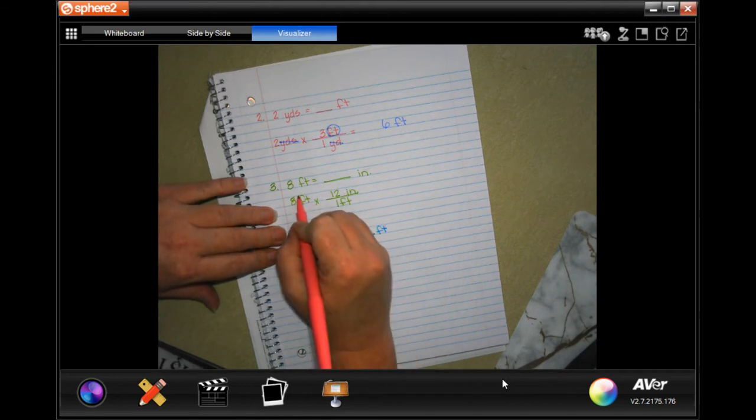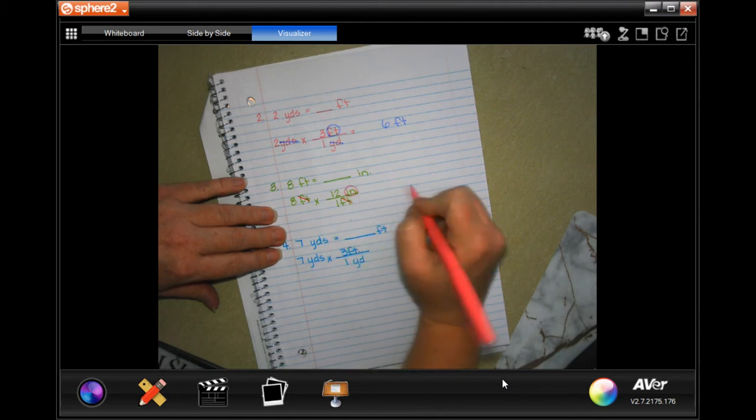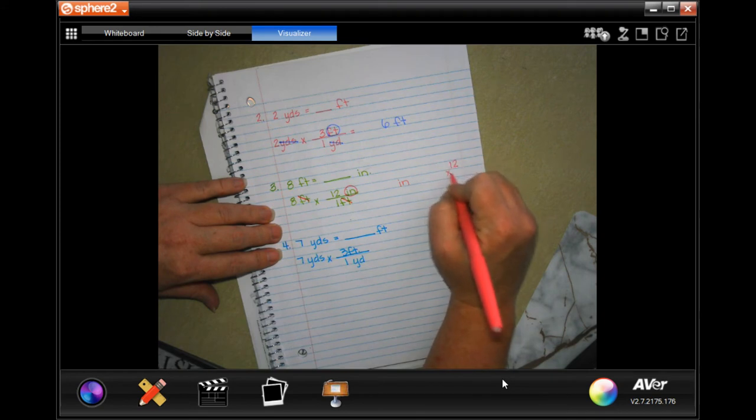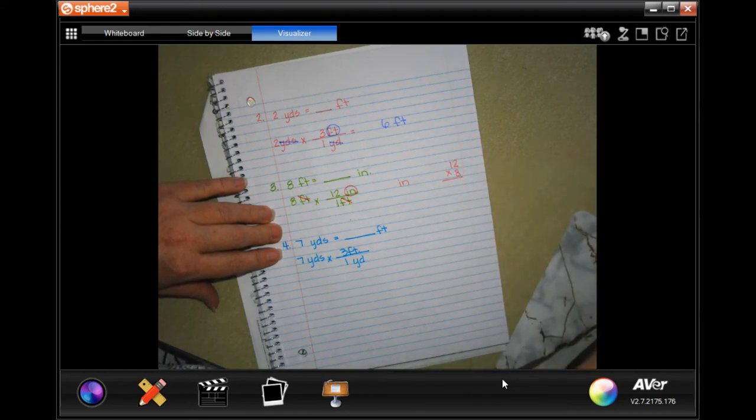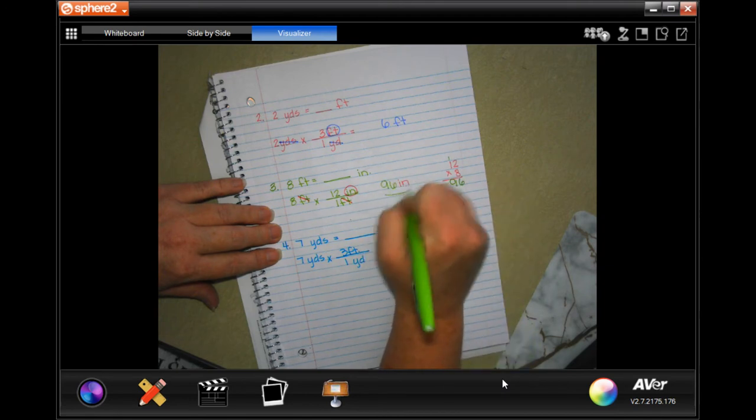And I put foot on the bottom because I want to cross out. I want to cross-cancel feet and wind up in inches. Now I just have to do 8 times 12. Well, I can do that over here. 8 times 2 is 16, carry that 1. 8 times 1 is 8, plus 1 is 9. 96 inches.